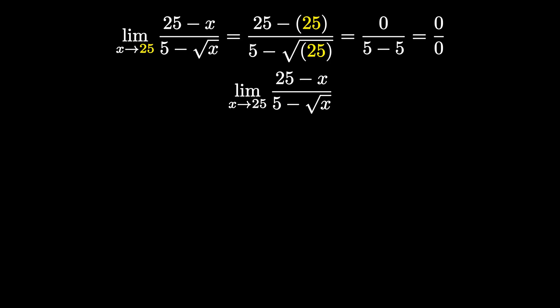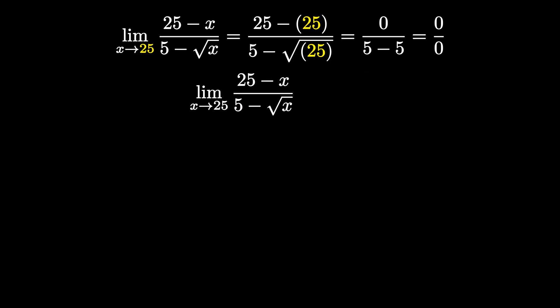We're going to focus all our attention on the denominator. Notice that in our denominator we have a radical. When rationalizing, we want to get rid of that radical. Our denominator is 5 minus the square root of x, so we multiply the top and bottom by the opposite sign — that is, 5 plus the square root of x. When we do that, we get the limit as x approaches 25 of 25 minus x times 5 plus the square root of x, all over 5 minus the square root of x times 5 plus the square root of x.